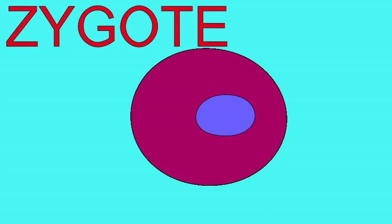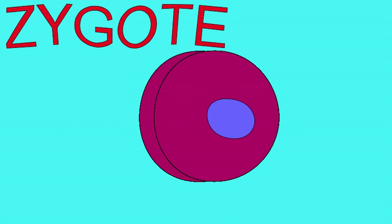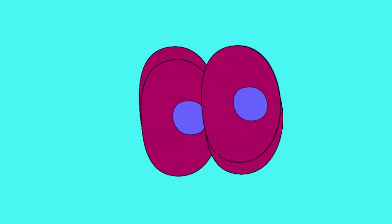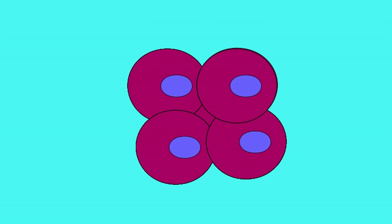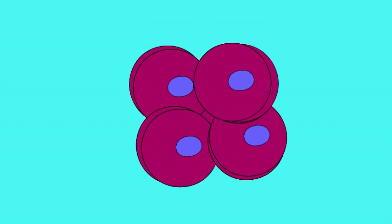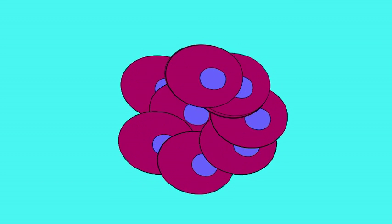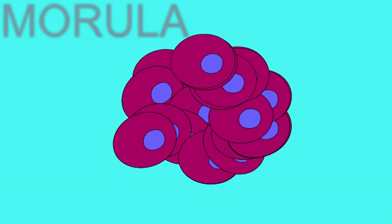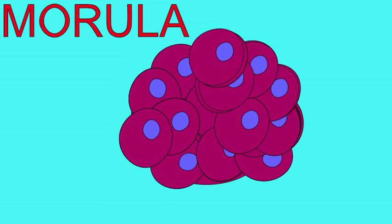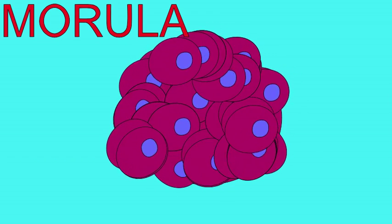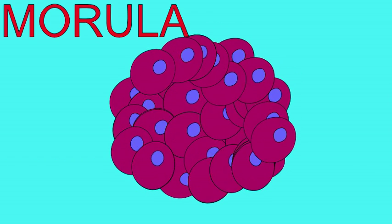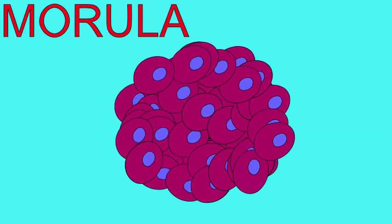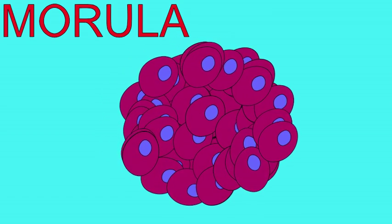When a zygote begins to divide, it does not immediately increase in size, since it will not obtain new nutrients until it implants in the uterine lining. It becomes a 2-cell embryo, then a 4-cell embryo, then 8, then 16 cells, and at this stage it is referred to as a morula, which is a solid ball of cells. This occurs around day 3.